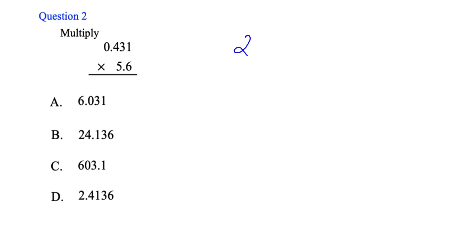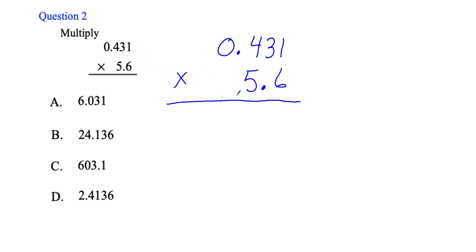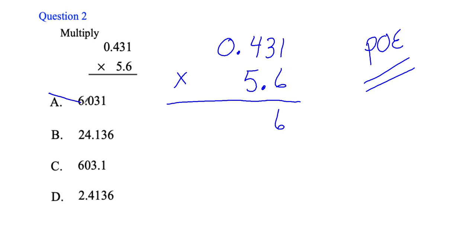Using that same thinking for 0.431 times 5.6: multiply the last digits — 6 times 1 is 6 — so my answer must end in a 6. This is called the process of elimination, POE. Any answer that does not end in 6, we can eliminate. A ends in a 1, so eliminate it. B ends in a 6, keep it. C ends in a 1, eliminate it. D ends in a 6, keep it. Now I'm down to B and D.